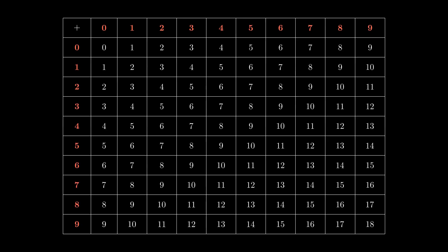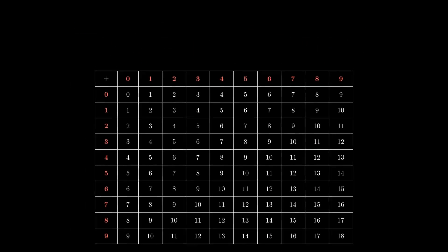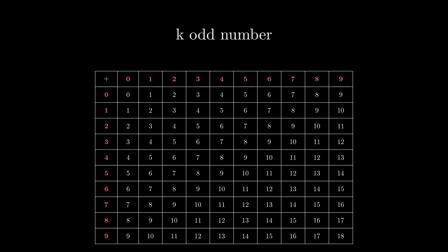Imagine we build an addition table. Each cell contains the sum of its row index and its column index. Now, pick an odd number, for example, k equals 3.